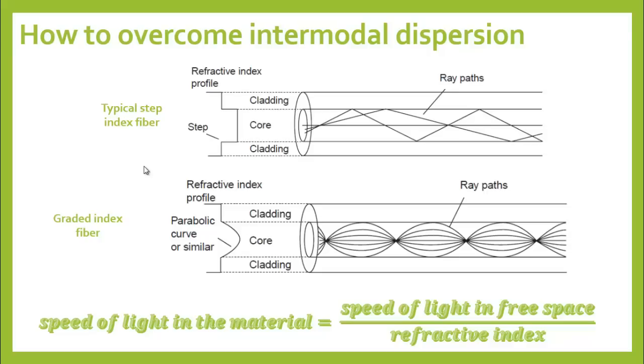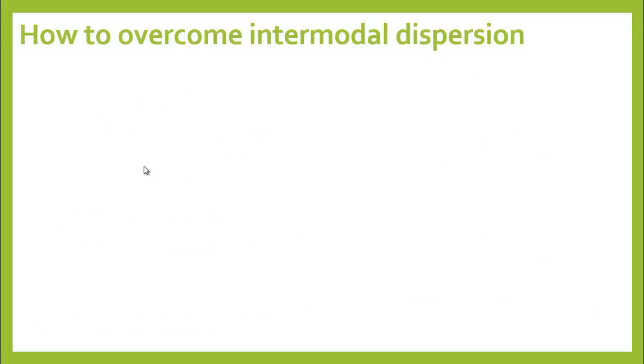If the core center has the highest refractive index and the outer edge has the least, the ray will increase in speed as it moves away from the center. The rate at which the refractive index changes is critical and is the result of intensive research. A parabolic profile is often employed but there are many others available in specialized fibers. This design of fiber eliminates about 99 percent of intermodal dispersion—not perfect but definitely a big improvement.